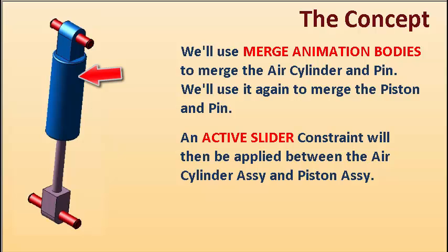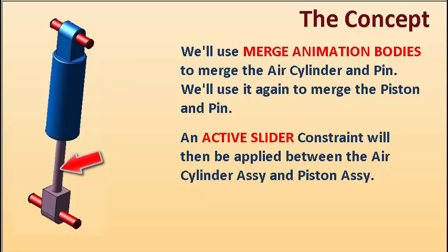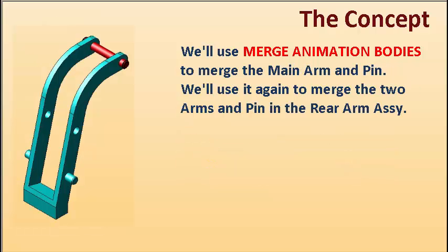We'll use merge animation bodies to merge the air cylinder and pin. We'll use it again to merge the piston and pin. An active slider constraint will be applied between the air cylinder assembly and the piston assembly.